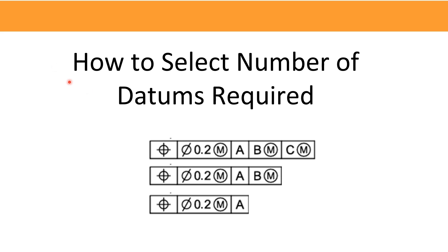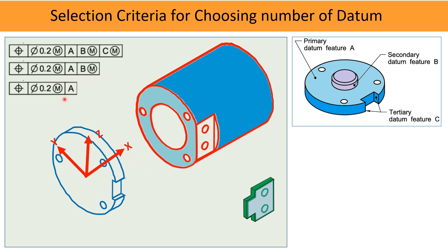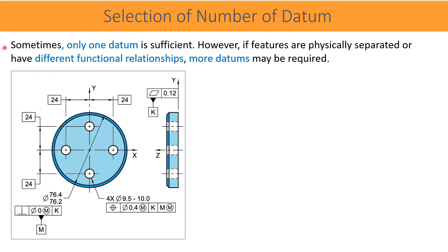Now, in this second session of the video, let us discuss how many datums are essential. In this example, we already seen that there are three datums essential. The assembly and function of the part would not perform if datums are reduced to number one. Sometimes a single datum is sufficient, or sometimes more datums are required. With the given example of drawing, we shall learn the criteria to select the number of datums on a part.